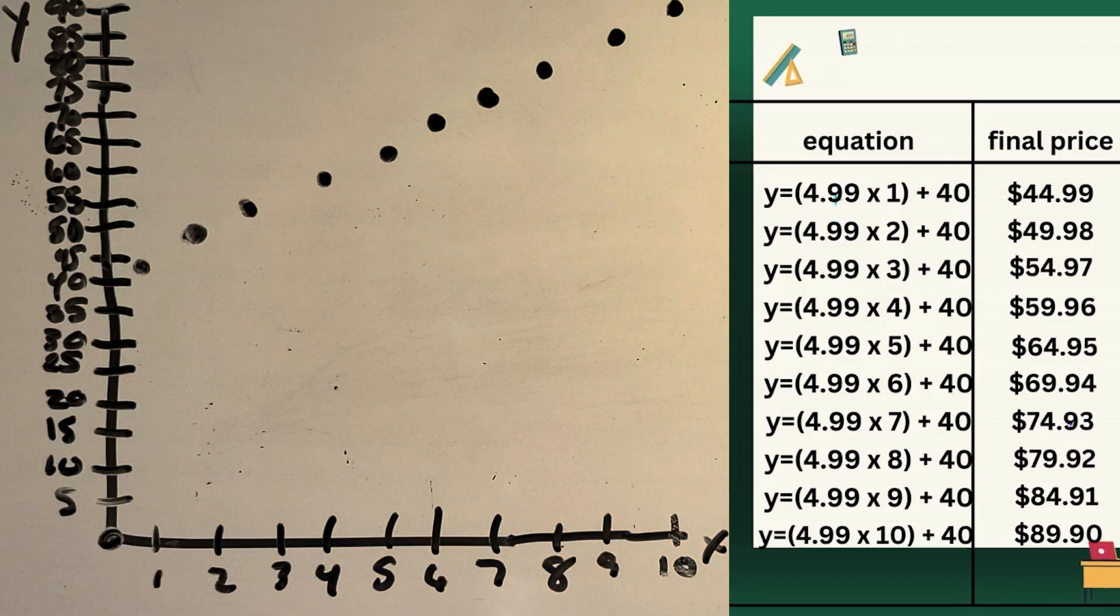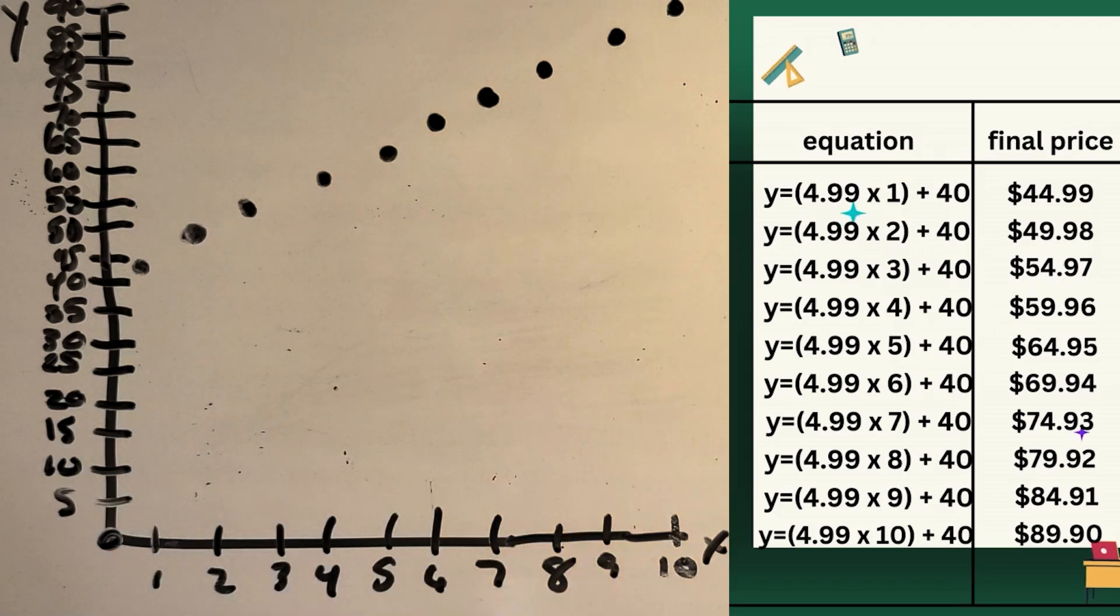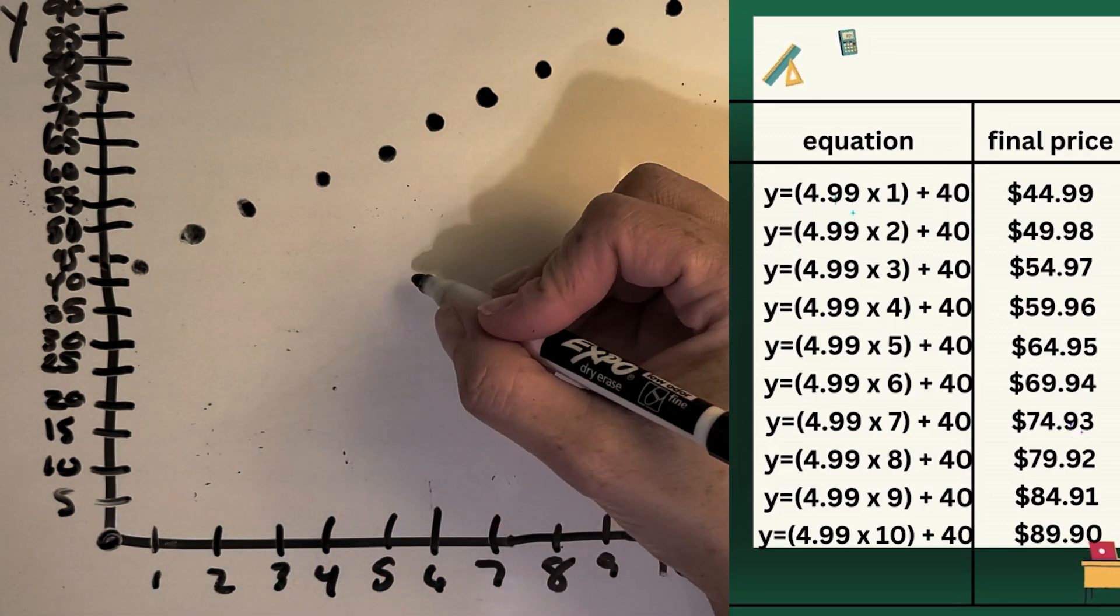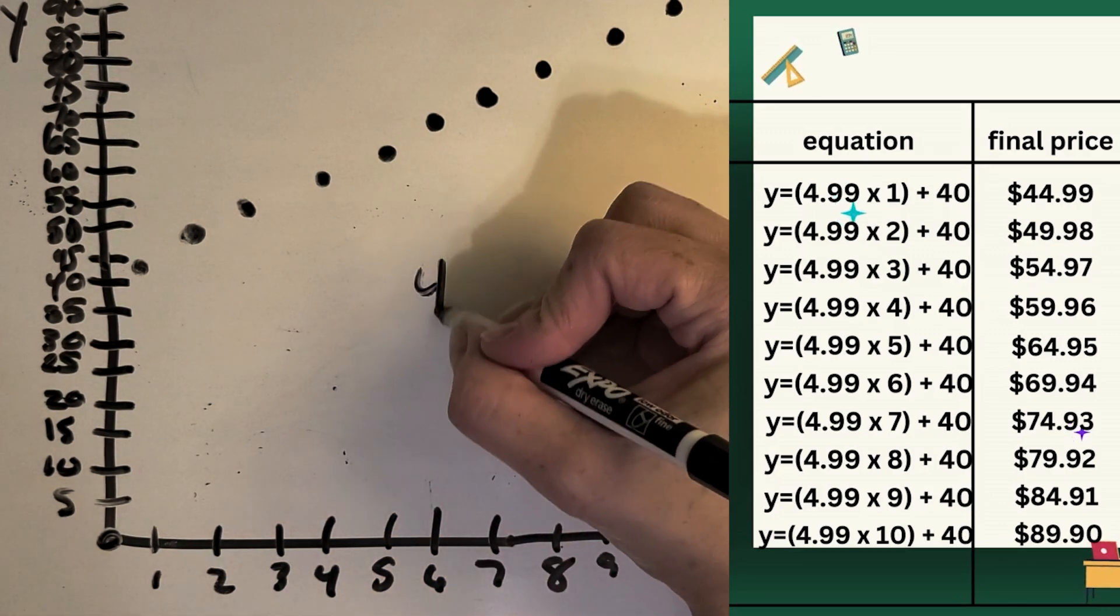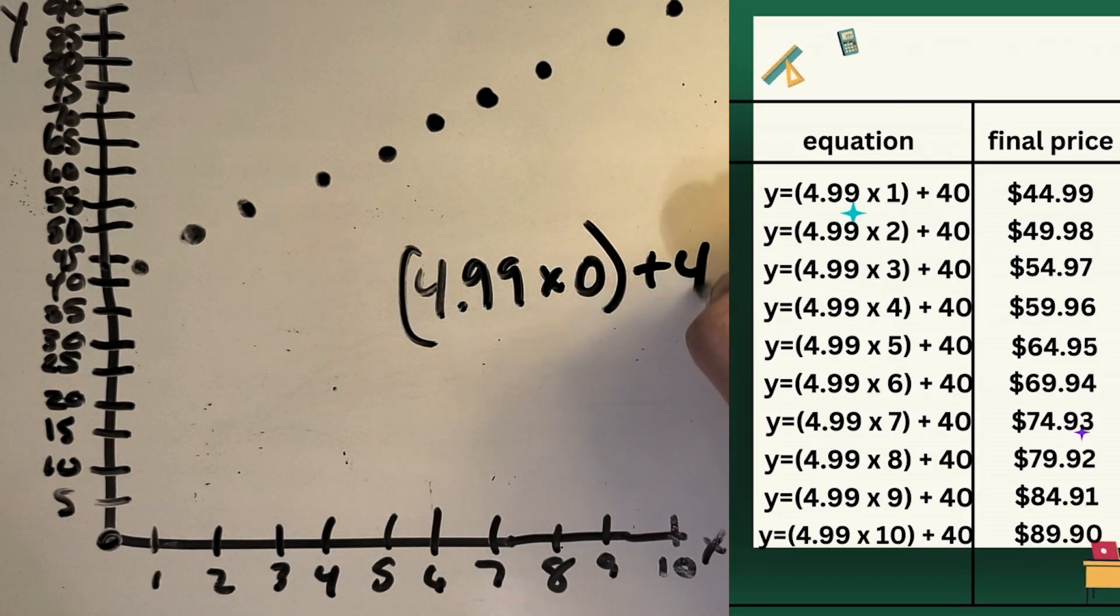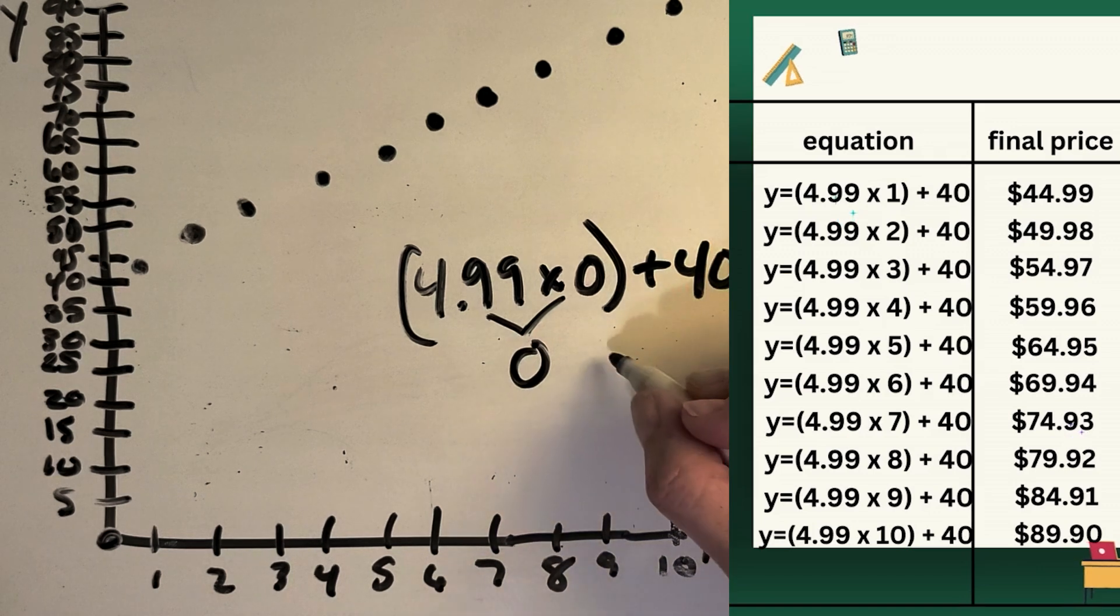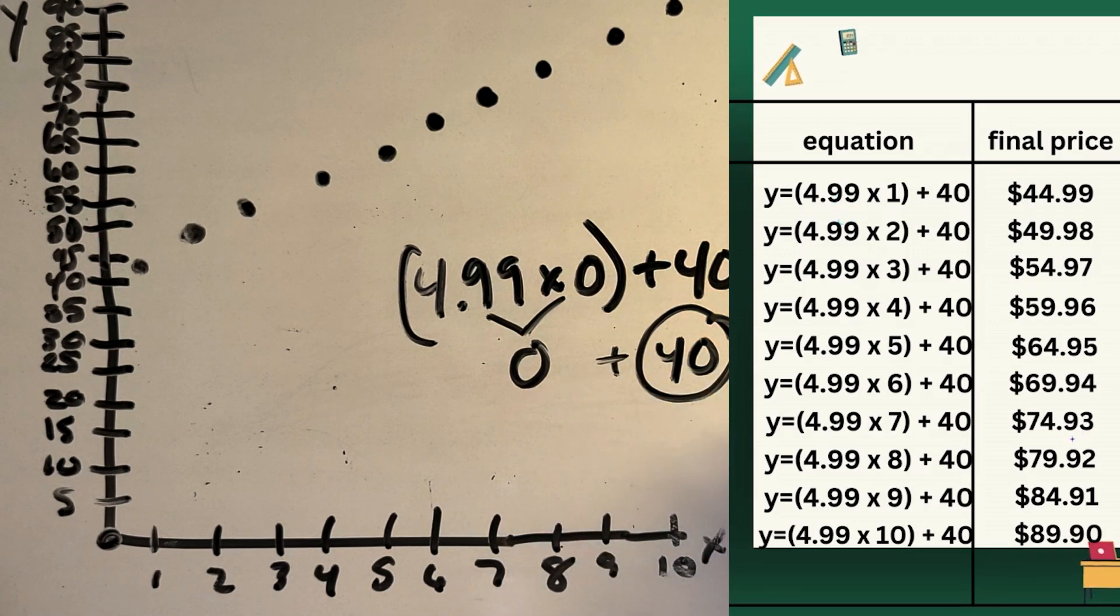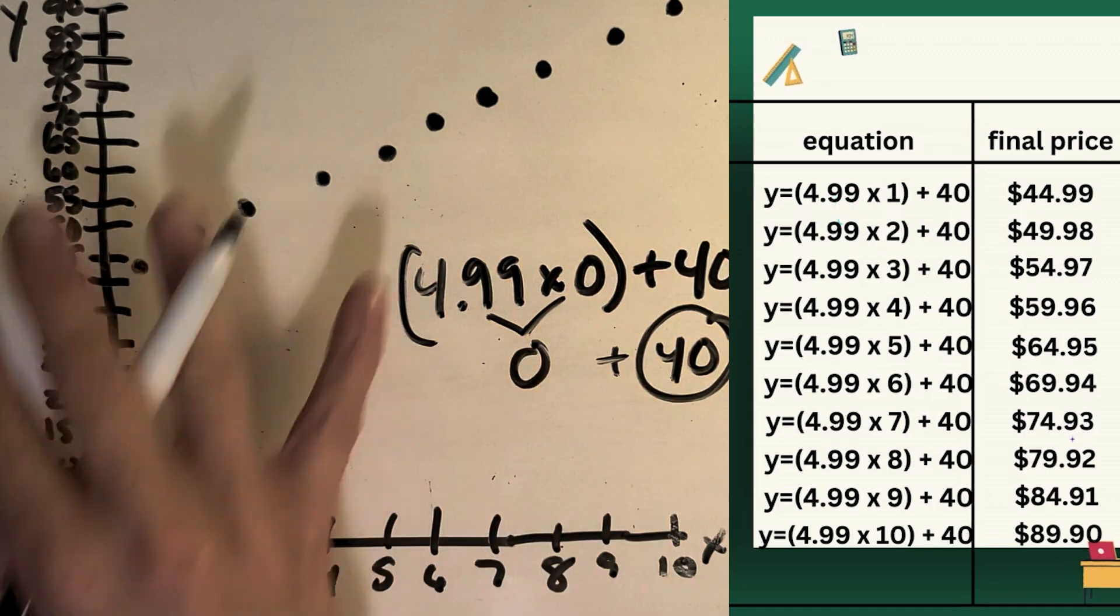And let me ask you this. What if we bought the base game and had zero DLCs? How do you think, where do you think I would graph that? So base game, but zero DLCs? Yeah, so you're probably thinking, well, if I had $4.99 times zero plus 40, that multiplication equals zero, and then it would just be the base game, so $40. So where would that go on the graph?